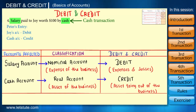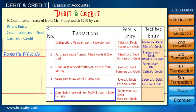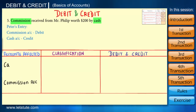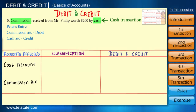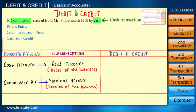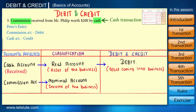So the second part is correct. Now for the last one — here Peter debited commission account. Let's analyze this transaction. Step one: which are the two accounts? One is commission and the second is cash account. Step two: classification — commission comes under the nominal account as it's an income of the business, and cash comes under the real account as it's an asset. So here we will debit cash account as we have received the cash, and we will credit commission account as it is the income of the business.